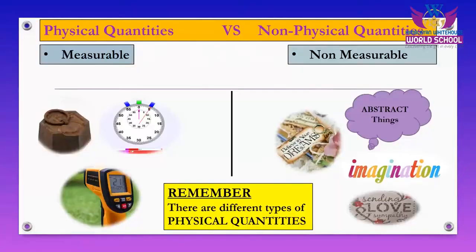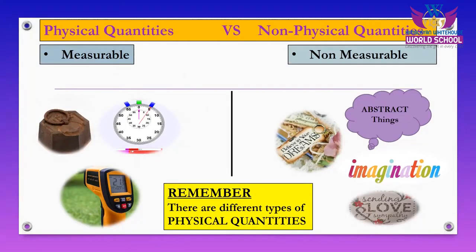For example, for mass we use kg, for time we have the watt — and for temperature we have instruments like the thermometer. Non-physical quantities fall under abstract things, like our dreams, imagination, love, and sympathy. These things can never be measured; they can only be felt.